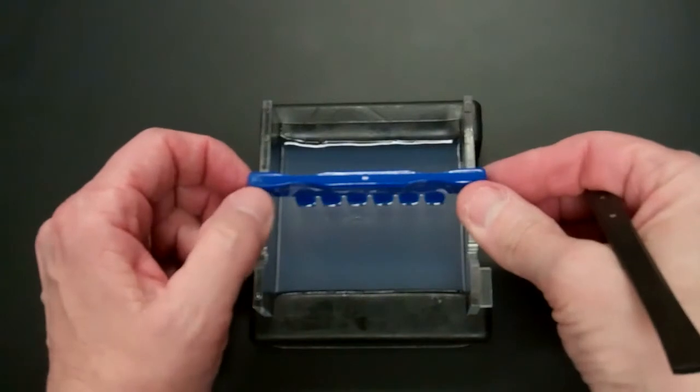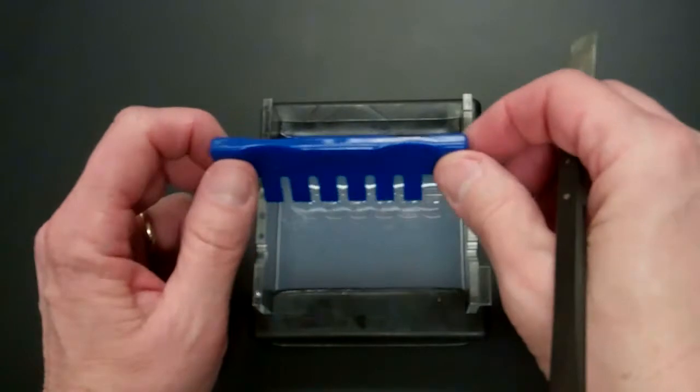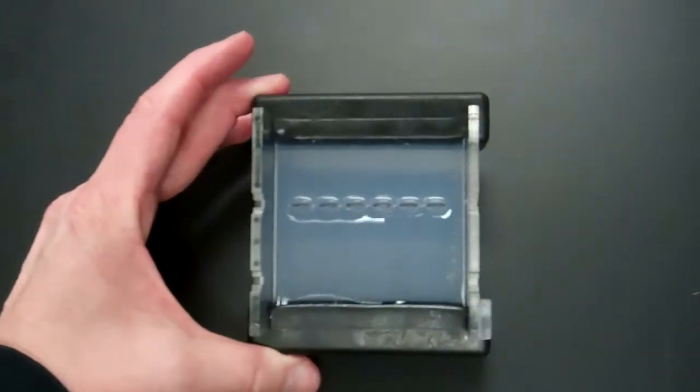So straight up, you want to take the comb out by lifting the comb straight up. And now you can see the wells that have been made.